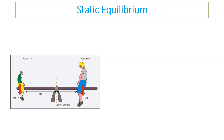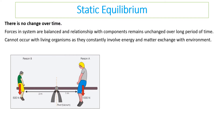The three levels of equilibrium we need to know are: firstly, static equilibrium. This is when there is no change over time — like two people sitting on a seesaw that won't change because the forces in the system are balanced and relationships between components remain unchanged over long periods of time.